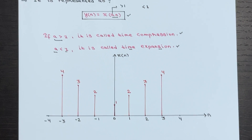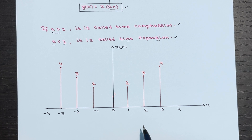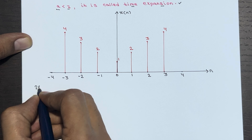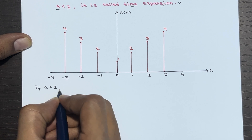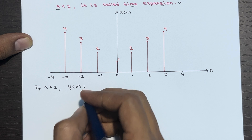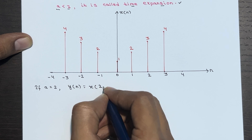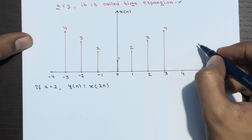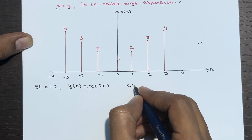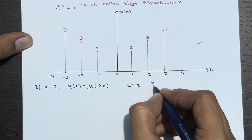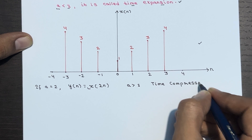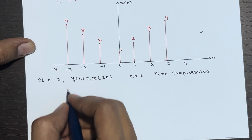Let's take the sequence X of n shown in this figure as an example. Suppose a is equal to 2. Then y(n) = X(a·n) = X(2n). Since a is greater than 1, you will get a time compression version of X(n).